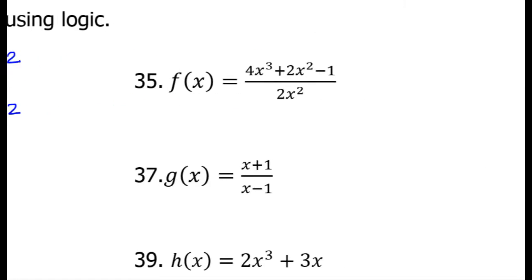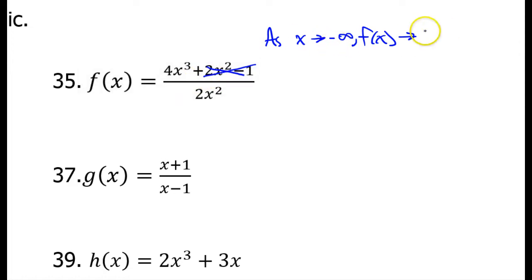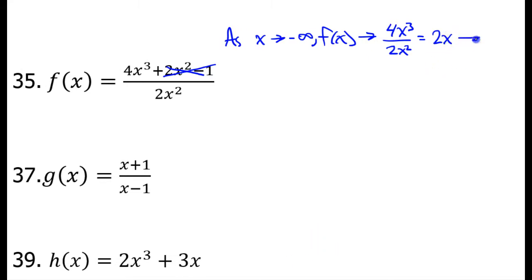Alright, let's do some more. As x approaches negative infinity, f of x approaches. Again, very quickly, these lower degree terms will become irrelevant — insignificant — as x approaches negative infinity. So, f of x approaches 4x to the third power over 2x squared. We're nowhere near zero, so we can cancel out these x's. x to the third power divided by x squared equals x. 4 divided by 2 is 2, so this is going to make 2x. Now, we can't stop there — we still have to ask ourselves what does the value of 2x approach as x gets smaller and smaller, as x gets more and more negative?